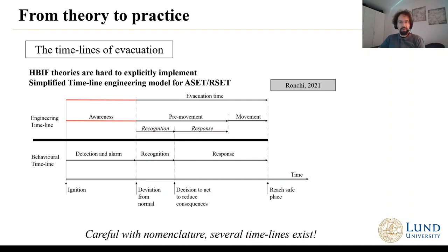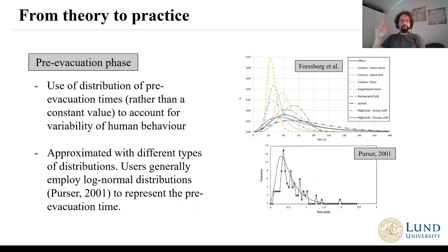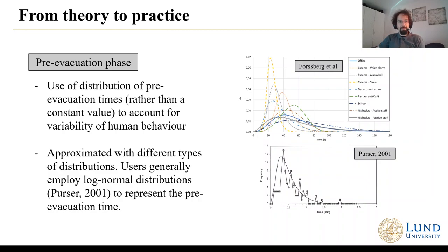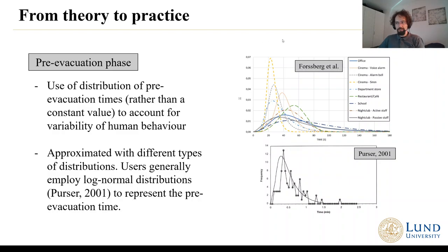These are simplified timeline engineering models that are implemented at an individual or collective level. Based on these timelines, there have been several studies trying to quantify certain types of behaviour — for instance, the pre-evacuation phase: what people do before they start their purposive movement towards a safe place. We can actually approximate the times that people take during that phase based on several conditions, like type of population, type of scenario, type of alarms, and so on. This is generally approximated with different types of distributions — we cannot say with the certainty of a constant number, but we can say there is a reasonable time span that people take to perform this set of actions during the pre-evacuation phase.